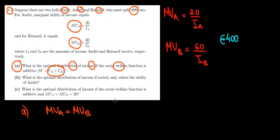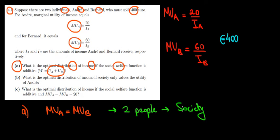The same analogy applies here, except that instead of thinking about two goods for one consumer, we think about two people for one society. We think about the utility of the entire society, made up of those two people. The same logic applies: we want to distribute the money so that we have the same utility from the last euro.